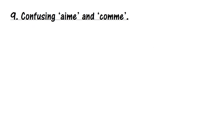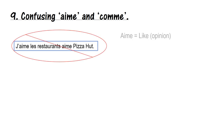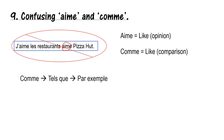Number nine: confusing 'aime' and 'comme' — both mean 'like' in English, but used in different circumstances. Here's an example I saw: 'J'aime les restaurants, aime Pizza Hut.' It sounds weird because we've got aime twice. This person is trying to say 'I like restaurants, like Pizza Hut.' Aime is 'like' when giving an opinion — 'j'aime les restaurants' is fine. We use comme if we're using 'like' as a comparison. So 'aime Pizza Hut' needs to change to 'comme Pizza Hut.' Or, if you want to be fancier, 'tel que' means 'such as' and 'par exemple' means 'for example.'